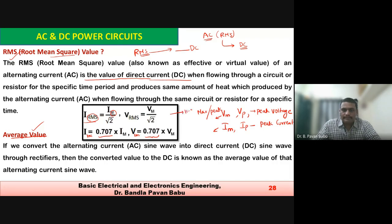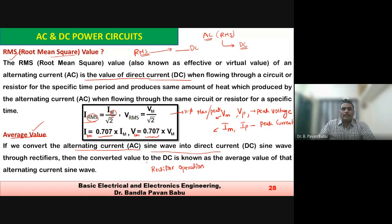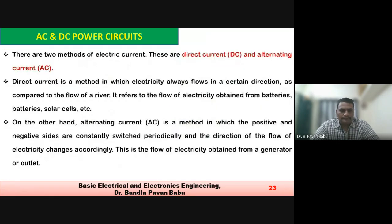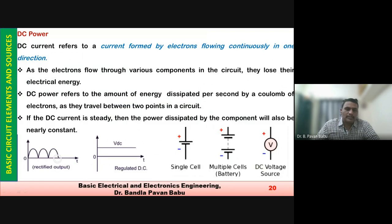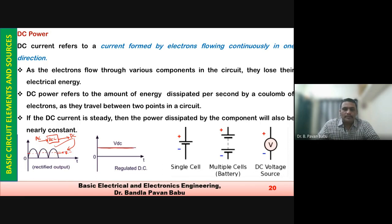This is called a rectifier operation — conversion of AC to DC. The rectifier converts AC input (either single phase or three phase) to DC output. The output generated will be ripple DC, and if we consider the average value, we can find out the exact DC power developed, which is useful for finding out the average value.